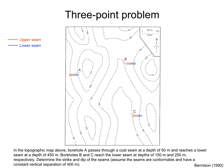From this information and the topographic contours, we can determine the elevation of the upper and lower seam at the boreholes. Here, these elevations are shown for the upper seam in red and for the lower seam in blue.